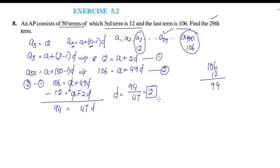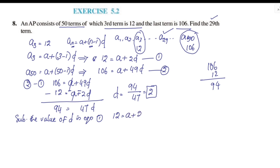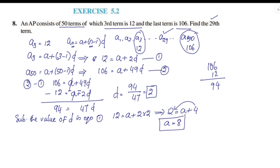Substituting d equals 2 into equation 1: 12 equals a plus 2d, so 12 equals a plus 4. Transposing, a equals 12 minus 4, which gives a equals 8.